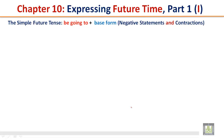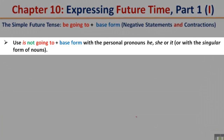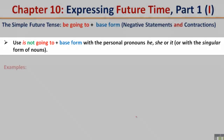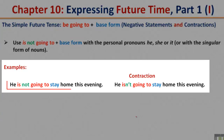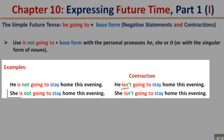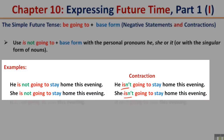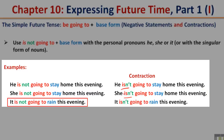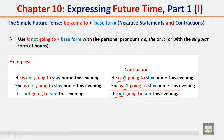The simple future tense: be going to plus the base form — negative statements and contractions. Use is not going to plus the base form with the personal pronouns he, she, or it, or with the singular form of nouns. Examples: He is not going to stay home this evening. Contraction: He isn't going to stay home this evening. She is not going to stay home this evening. Contraction: She isn't going to stay home this evening. It is not going to rain this evening. Contraction: It isn't going to rain this evening.